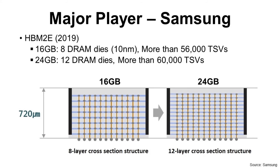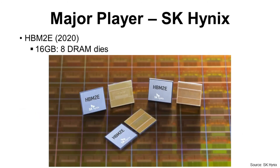Major players of HBM are Samsung and SK Hynix. In 2019, Samsung announced HBM2e memory, which has 8-stack DRAM dies with more than 56,000 TSBs, and they started mass production from February 2020. Samsung also developed industry-first 12-stack DRAM dies for 24GB in 2019. In July 2020, SK Hynix started mass production of HBM2e as well.